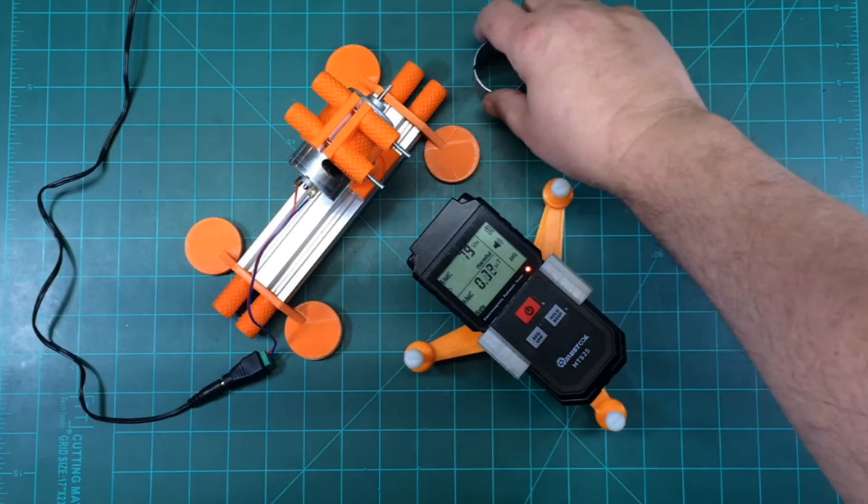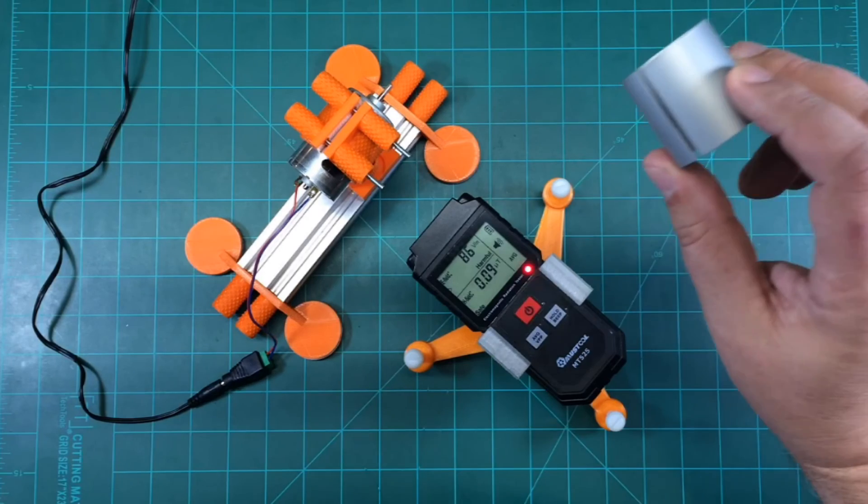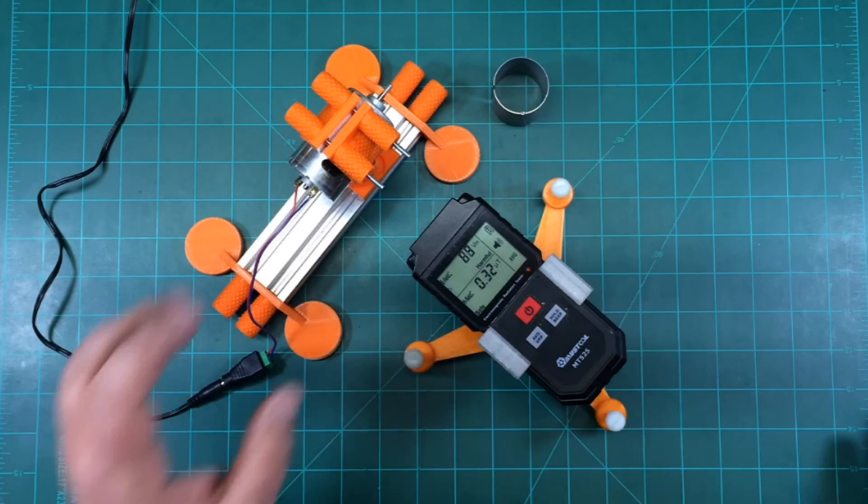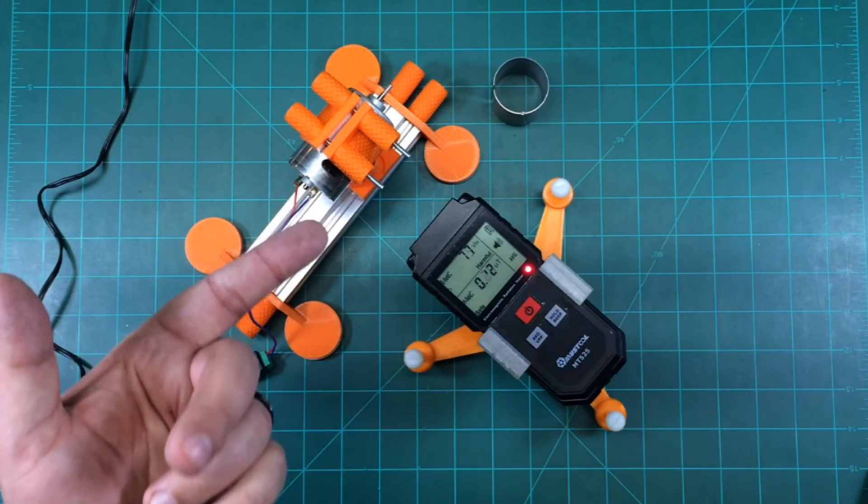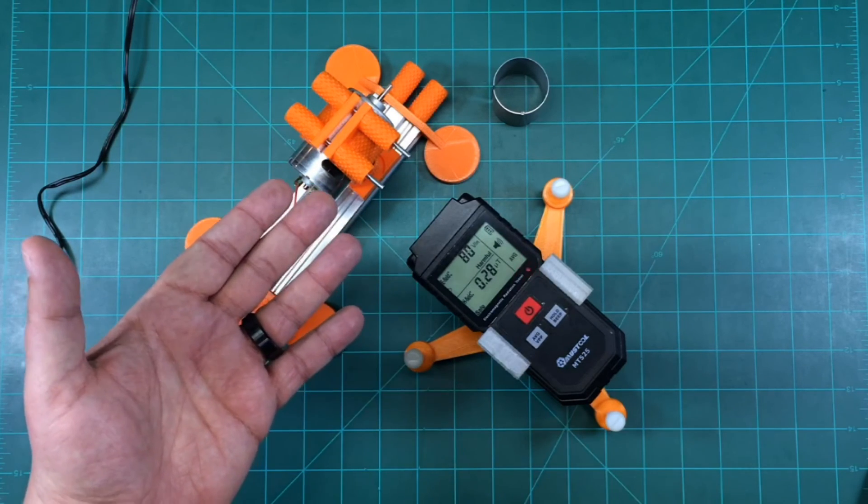So if you're ever wondering what this ring does on a motor, it is a flux ring, and it compresses the magnetic field to increase the torque, and as we've just shown, it actually works.